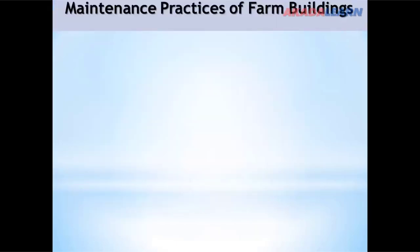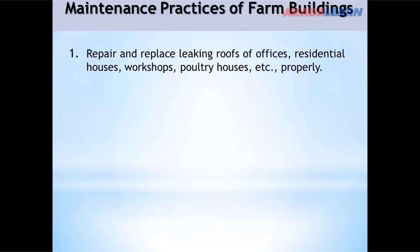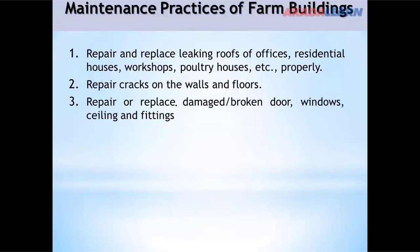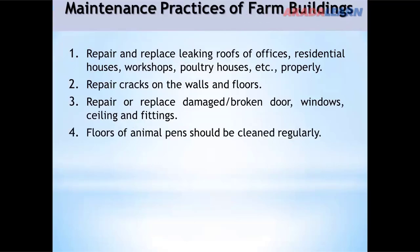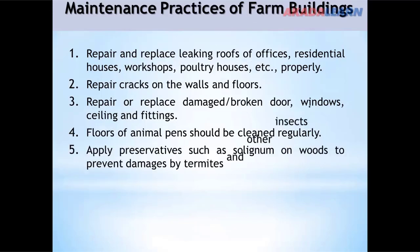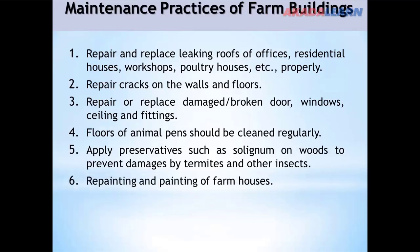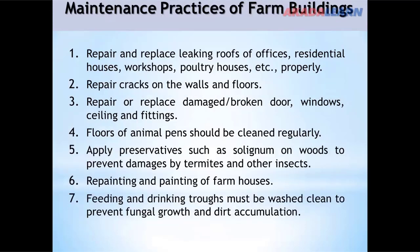General maintenance practices of farm buildings: repair and replace leaking roofs of offices, residential houses, workshops and poultry houses. Properly repair cracks on walls and floors. Repair or replace damaged broken doors, windows, ceilings and fittings. Floors of animal pens should be cleaned regularly. Apply preservatives such as solignum on wood to prevent damage by termites and other insects. Painting of the houses should be done regularly or periodically. Feeding and drinking troughs must be washed clean to prevent fungi growth and dirt accumulation.